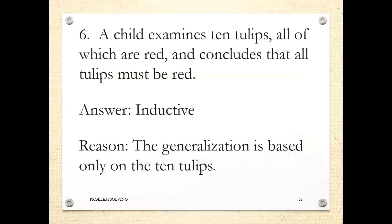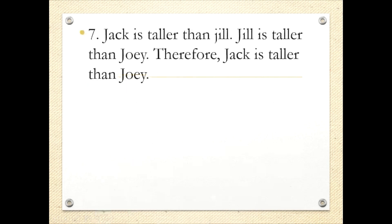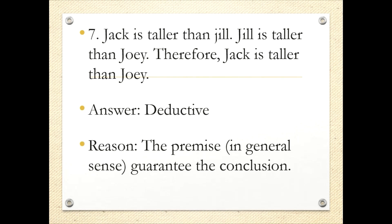Number 6: a child examines 10 tulips, all of which are red, and concludes that all tulips must be red. This is inductive, because the generalization is based on only 10 tulips — not all tulips. Number 7: Jack is taller than Jill; Jill is taller than Joey; therefore, Jack is taller than Joey. This is deductive — the premise guarantees the conclusion.